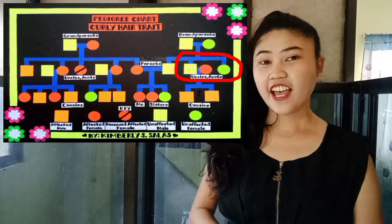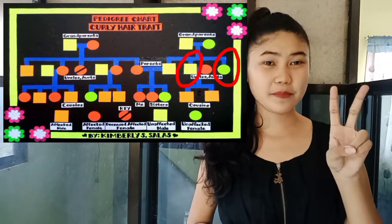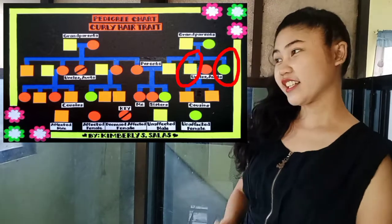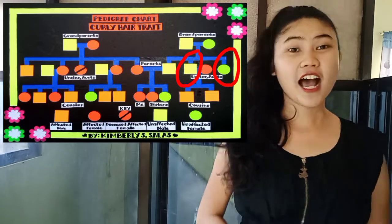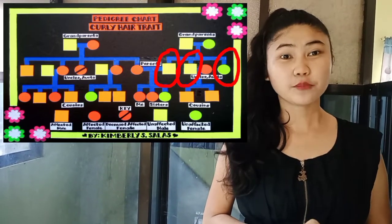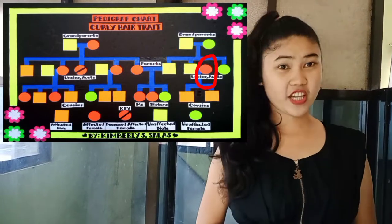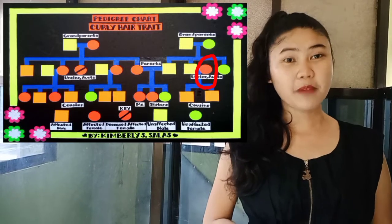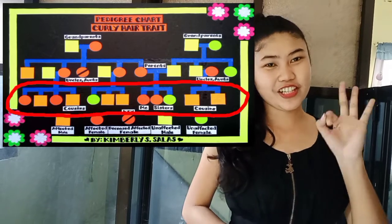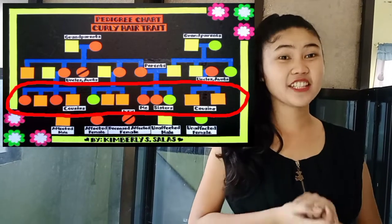These are my uncles and aunts from my father's side. My father has two siblings — one male and one female. Moving forward to the third generation, which consists of all my cousins, as well as me and my siblings.